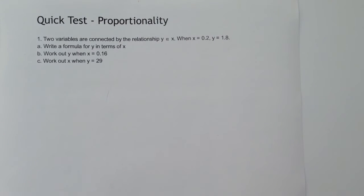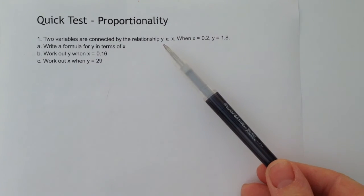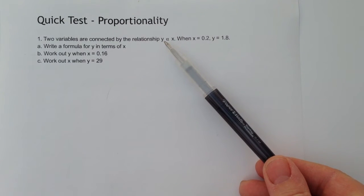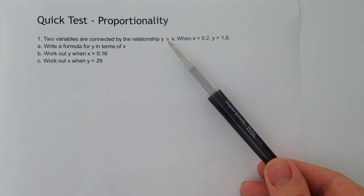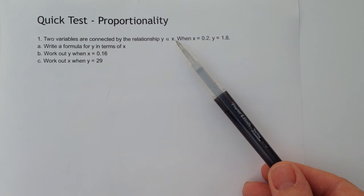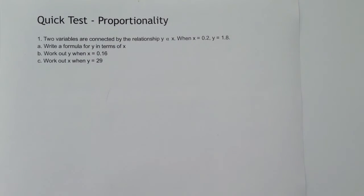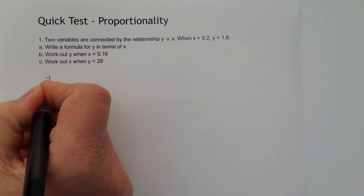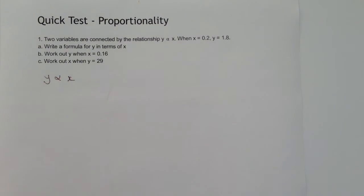It says two variables are connected by this, so in other words what we're saying is y is directly proportional to x. So we're going to write that down: y is directly proportional to x.